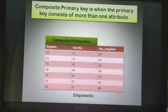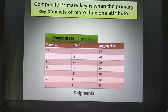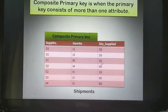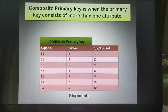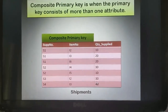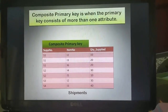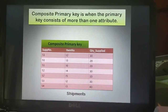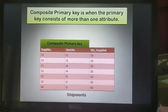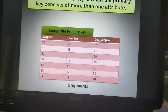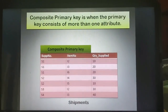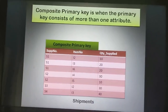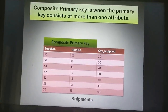Now in such a situation, how can we select the primary key for the table? Because none of the attributes is uniquely identifying any of the records of the table. So in such cases, we have to see whether any combination of two attributes can act as a primary key.